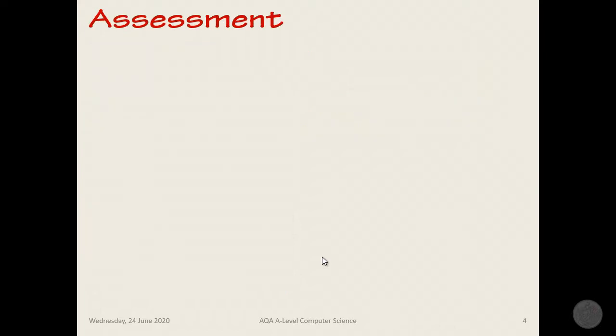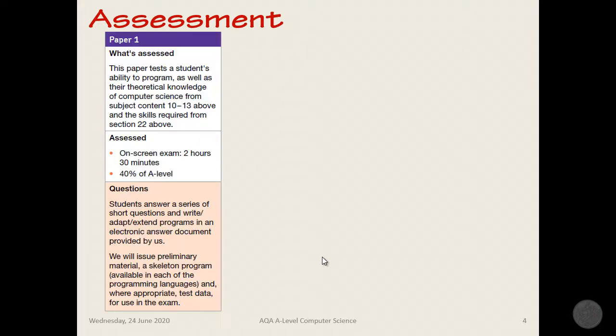Let's take a look at how the A-level computer science is actually assessed. There are three components to this. The first is Paper 1. Paper 1 is all about programming, problem solving, and thinking computationally. You will have a fair amount of knowledge from GCSE with programming fundamentals, and we'll be looking to build on that significantly. The way this is assessed is actually on screen. You'll be in front of the computer for two and a half hours, and a fair amount of that time you will be programming.